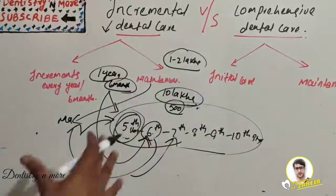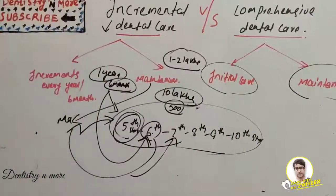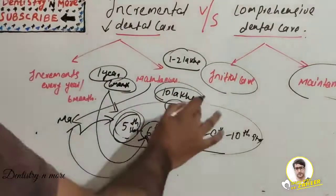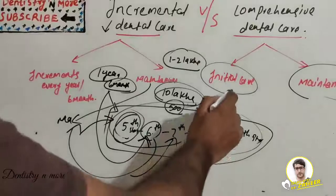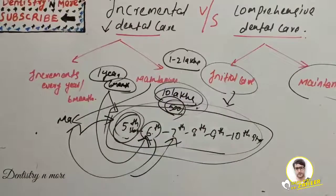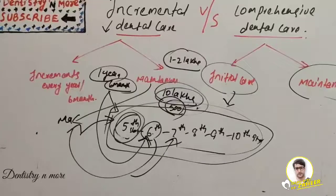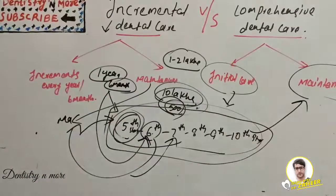Now let's look at comprehensive dental care — it is exactly the opposite. Here also we provide initial care and maintenance care, but we have ample funds — the entire ten lakh rupees in the first year itself, along with enough workforce. In the first year of the program, we take up the entire population of 500 students at the same time and provide initial care, meaning all accumulated treatment needs are addressed. That is comprehensive dental care.